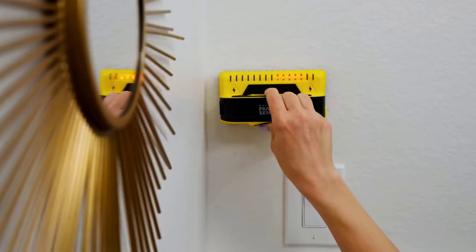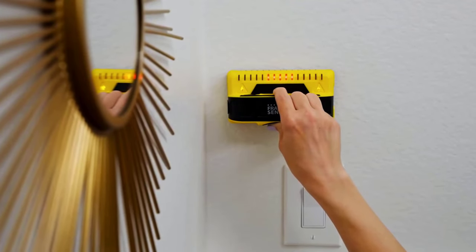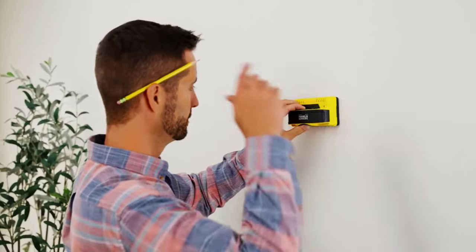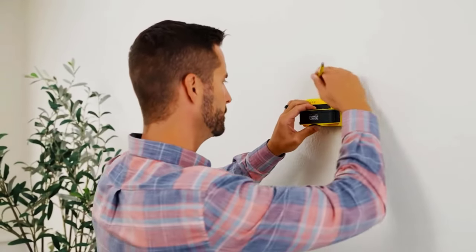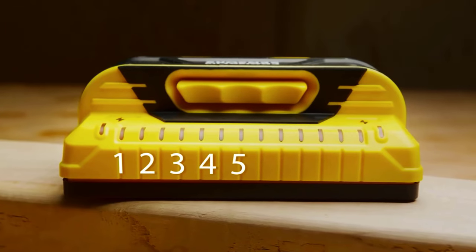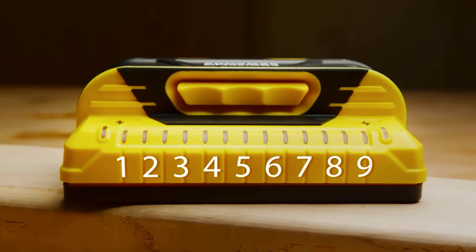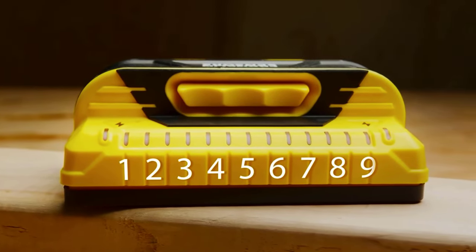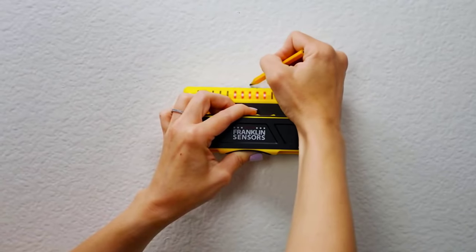Franklin Pro Sensor M150, the only stud finder you will ever need. This small box is actually a professional tool that allows you to find hidden wiring in walls, as well as metal and wooden studs. You don't need to set up and calibrate the device to use it either. Just turn it on and press it against the wall.